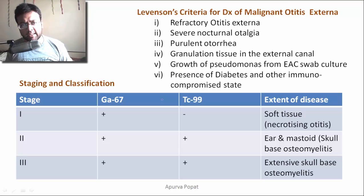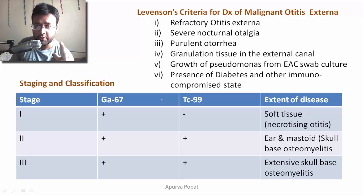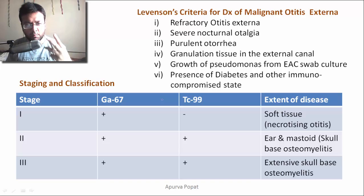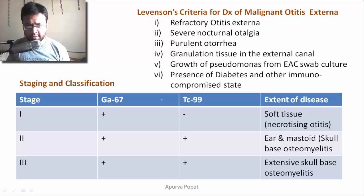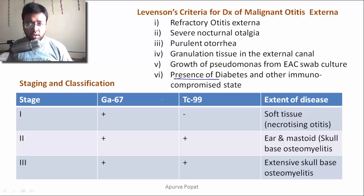Levinson's criteria for diagnosis of malignant otitis externa include: refractory otitis externa unresponsive to conservative treatment, severe nocturnal otalgia, purulent otorrhea, granulation tissue in the external auditory canal, growth of Pseudomonas on pus culture, and presence of diabetes or other immunocompromised states.